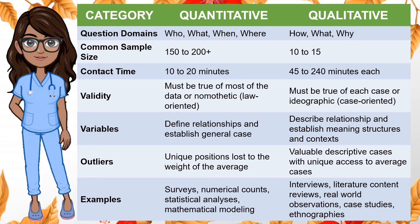Examples of quantitative research are surveys, numerical counts, statistical analysis, and mathematical modeling. Examples of qualitative research include interviews, literature content reviews, real-world observations, case studies, and ethnographies.